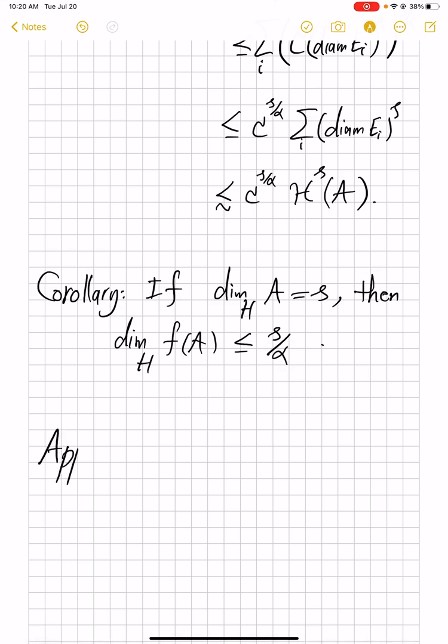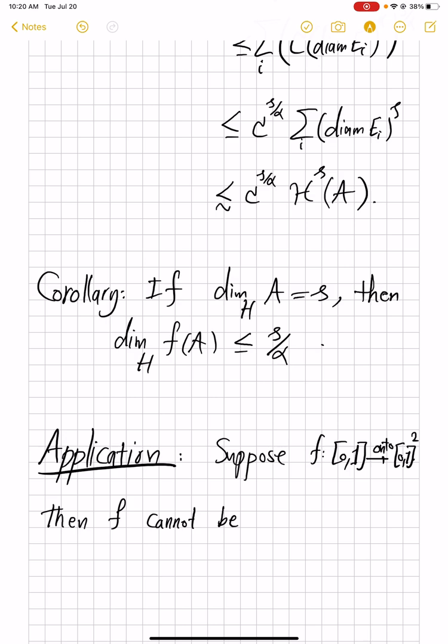An interesting application of this is to the space-filling curves. Suppose f is from the unit interval [0,1], onto, it's a surjective map, onto the unit cube. Then f cannot be alpha Hölder for any alpha bigger than 1 over 2.